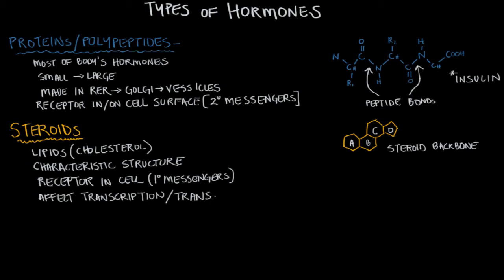I'll do a video on exactly how steroids affect the cell. For now, think of steroids as major hormones in our body — not just a means for athletes gaining an edge. Some examples of important steroids are those from the adrenal cortex, like cortisol and aldosterone, and those from the gonads — the sex hormones: testosterone, estrogen, and progesterone.